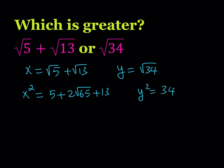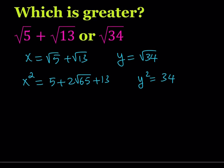So I'm going to compare x squared and y squared first and then I'm going to go back and compare this to x and y. Let's combine like terms. x squared becomes this. And y squared is 34.